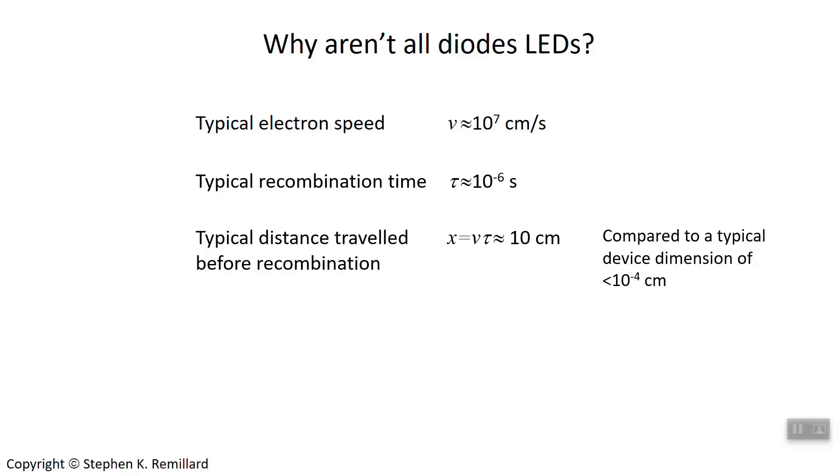But devices aren't that big. A typical device is less than 1 micron across. So the distance needed to turn electrons and holes into photons is considerably larger than the size of a device. And so that's why long recombination times of some materials make them also poor emitters. It prevents electrons and holes from finding each other and becoming a photon.